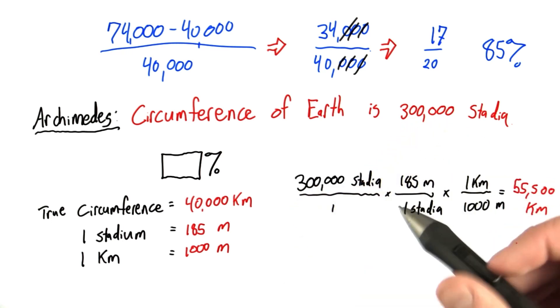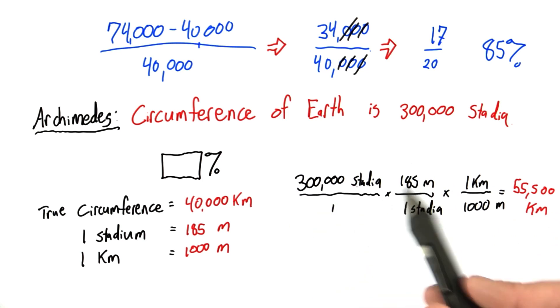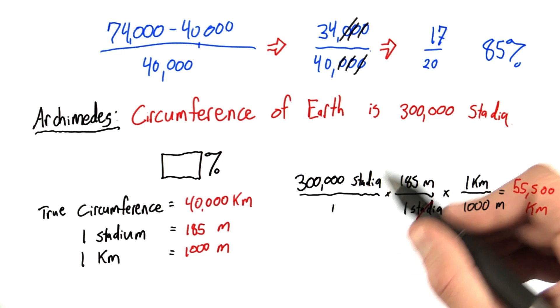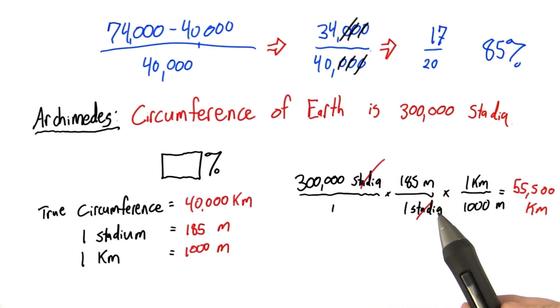And so to do this conversion, we write our original number, 300,000 stadia, multiplied by our first conversion factor, in which the stadia cancel out, multiplied by our second conversion factor, in which the meters cancel out, and then we're left with 55,500 kilometers.